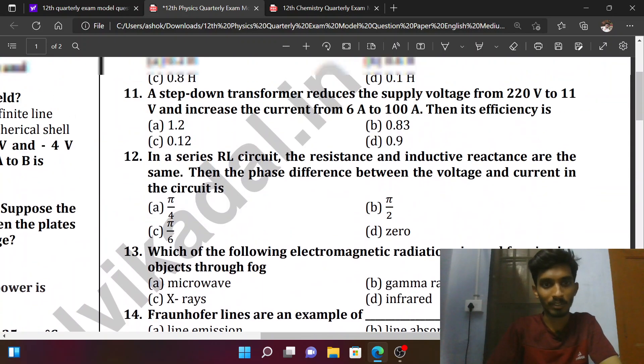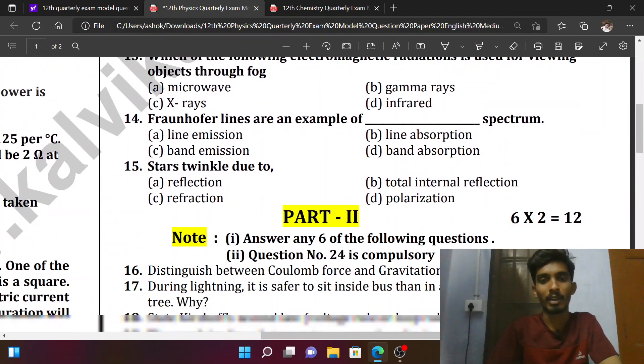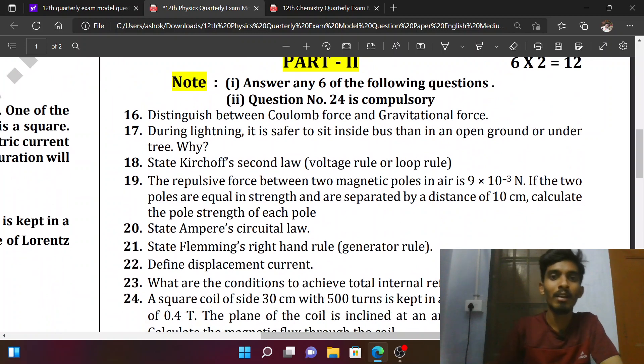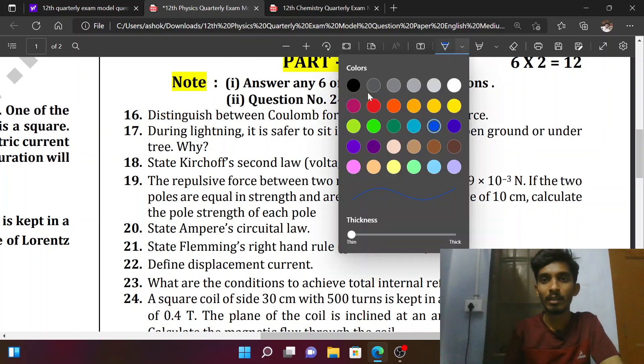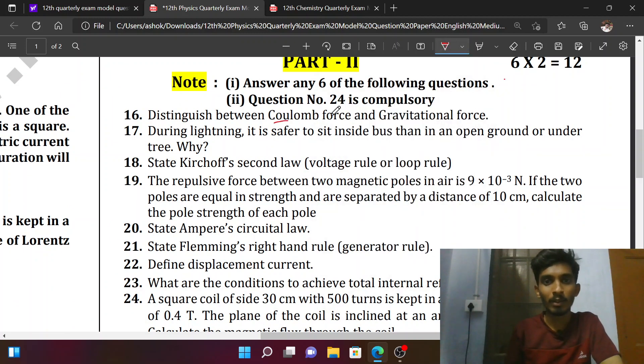Coming to 2 marks in Part 2, what are the first questions? Distinguish between Coulomb force and gravitational force. This is 2 marks or 3 marks. What we need to do is write in tabular form. We need to write in 2 marks: Coulomb force and gravitational force.